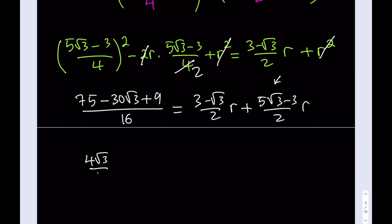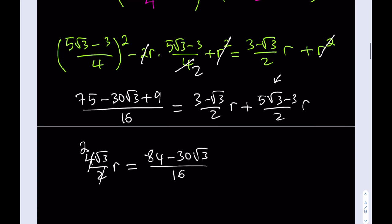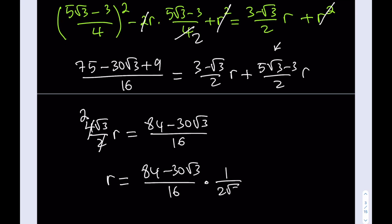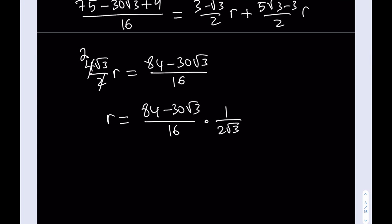So 2√3 · R = (84 − 30√3)/16. I can cross-cancel — divide left side by 2 — giving 2√3 · R = (84 − 30√3)/16. Multiplying both sides by 1/(2√3), R = (84 − 30√3)/(16 · 2√3) = (84 − 30√3)/(32√3).